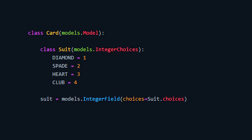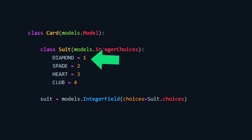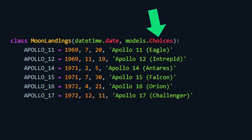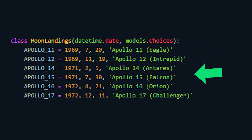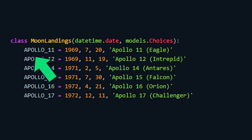Our last major change is enumerations for model field choices. This change allows you to build a list of choices for a field by defining the type. For example, if you had an enumeration list of choices that were defined by integer values, you would utilize something like this. With this change comes IntegerChoices, TextChoices, and a general Choices class. The general Choices class can be used to define a concrete data type that isn't an integer or text. Let's take a look at Django's example here, which uses the datetime.date field to define all of its choices as a date. We can also see our ability to add human-readable labels to these strict data type choices. If no label has been set, it will automatically use the member name, such as Apollo 11, Apollo 12, etc.